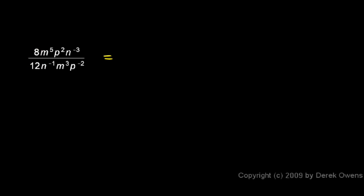First, let's think about the 8 over 12. That can reduce. If I divide each of those by 4, I get a 2 up top and a 3 down below. So my answer is going to have a 2 up top and a 3 on the bottom.